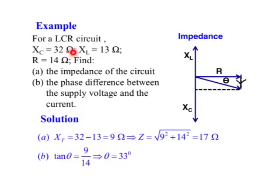For this LCR circuit, you have to find the impedance of the circuit and also the phase difference between the supply voltage and the current. For question A, you find out the net reactance between these two. The net is 9 ohms, and 9 ohm reactance has to be added to the resistance using Pythagoras, and that gives the impedance equal to 17 ohms.